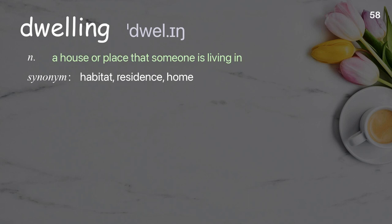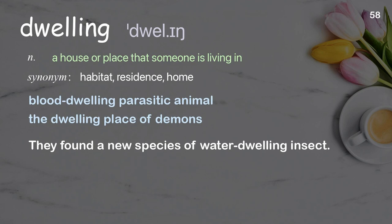Dwelling: a house or place that someone is living in. Examples: blood-dwelling parasitic animal, the dwelling place of demons. They found a new species of water-dwelling insect.